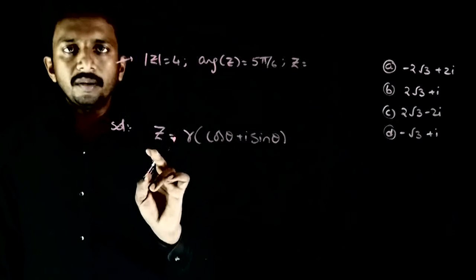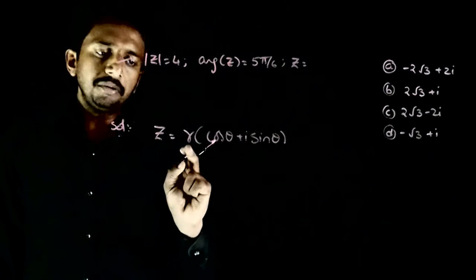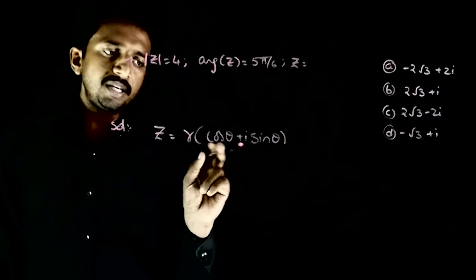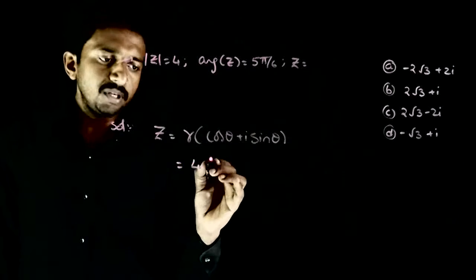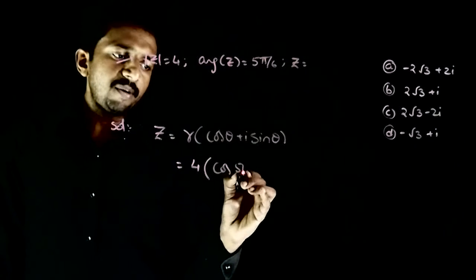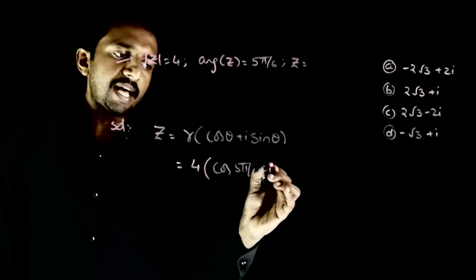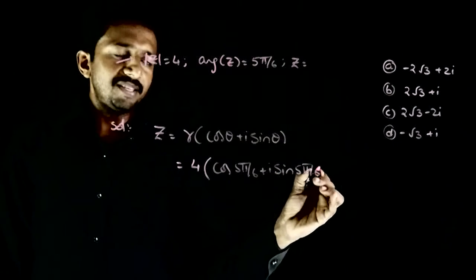So the complex number z equals mod z into cos θ plus i sin θ. That is equal to... mod z is given as 4, so r is 4 into cos 5π by 6 plus i sin 5π by 6.